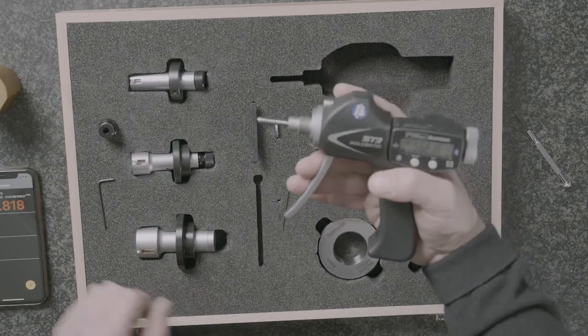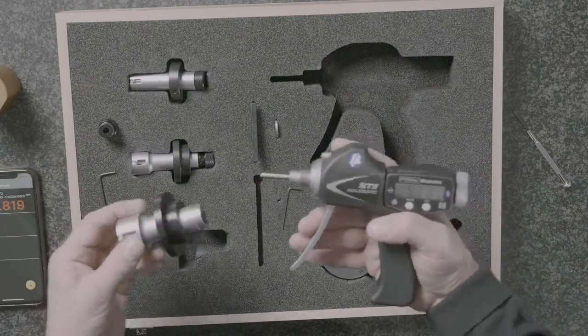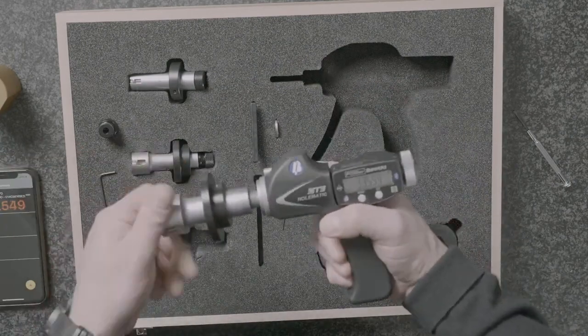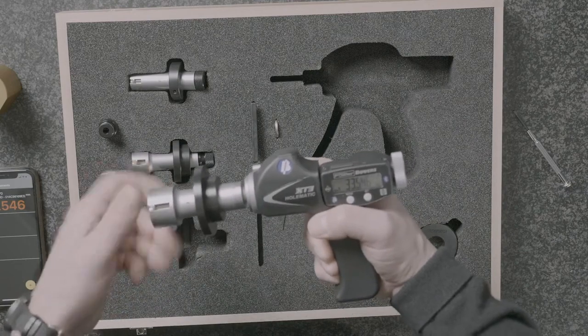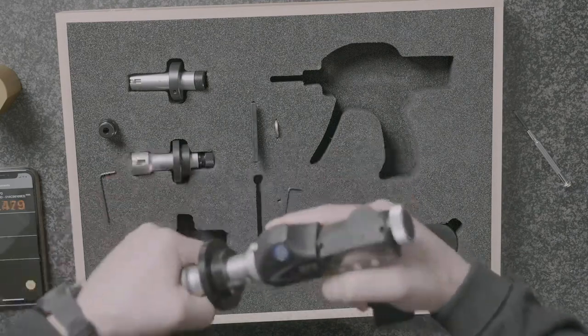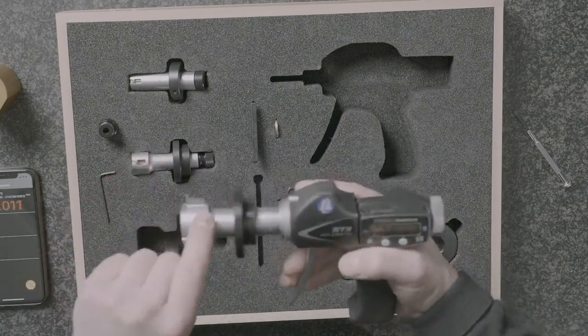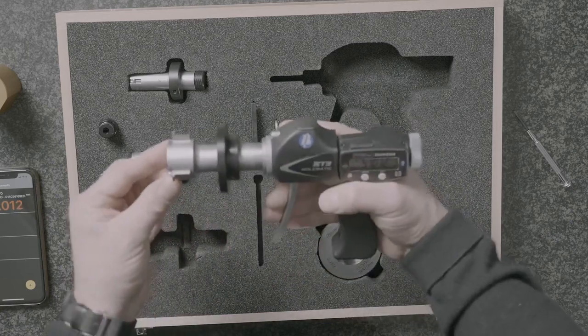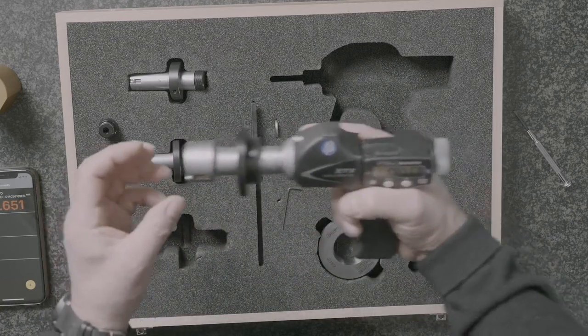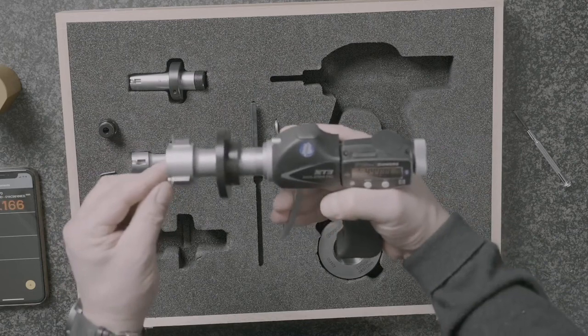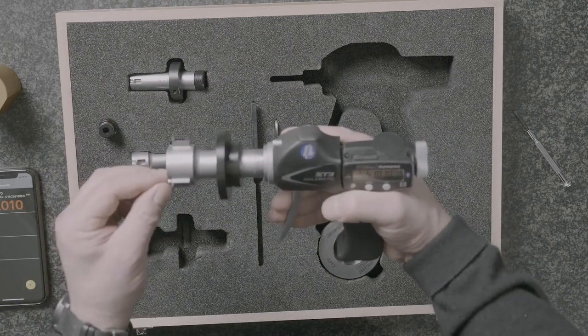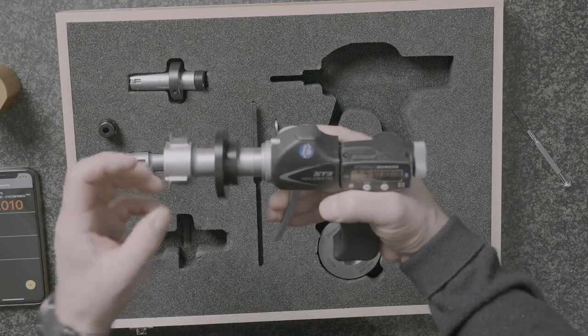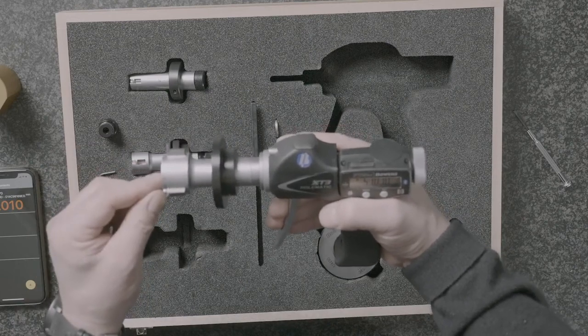Now, the difference with the groove headset is the profile of the anvils. The anvil profile has been stepped down, as you see here, to allow access into an entry diameter and then to allow the anvils to come into the groove, full depth of the groove to measure the groove diameter.